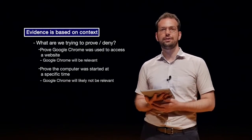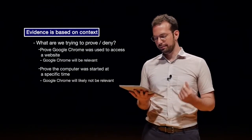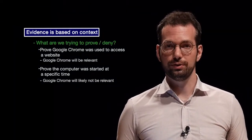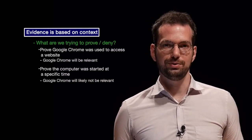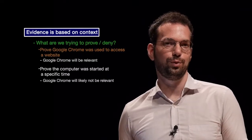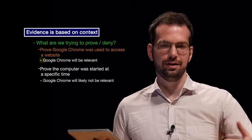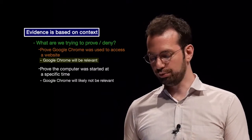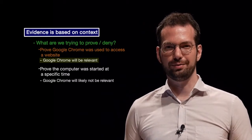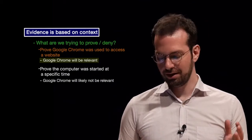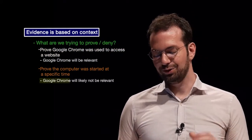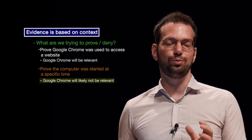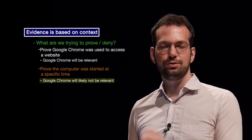Electronic evidence is based on context. Evidence always has to be evaluated in context, so we need to figure out exactly what we're trying to prove or deny. We potentially want to prove that Google Chrome was used to access a website — in that case, the data relating to Google Chrome will be relevant. But in another case, if we want to prove the computer was started at a specific time, Google Chrome will likely not be as relevant.